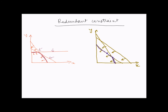The boundaries of the feasible solution region are represented by this line and this line. This constraint here does not contribute to the boundary of the feasible solution region. So that means even if you omit this constraint, the solution will not change. This kind of constraint, which does not contribute to the boundary of the feasible solution region, is known as a redundant constraint.